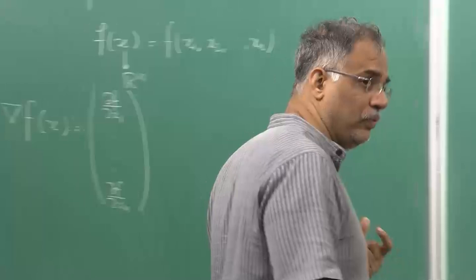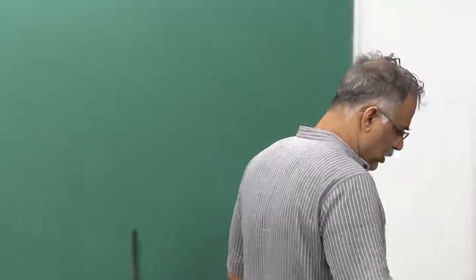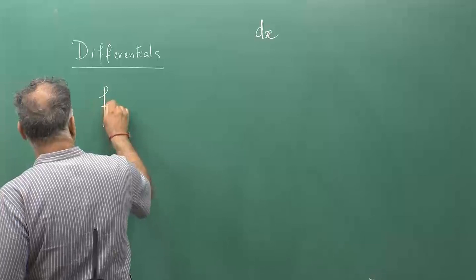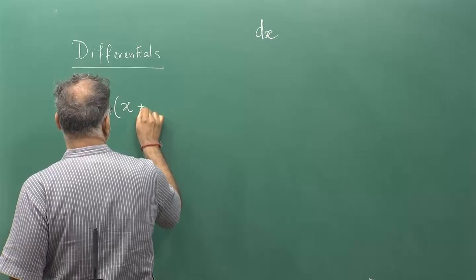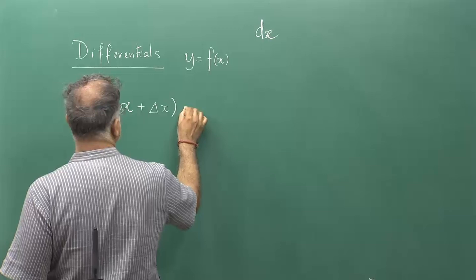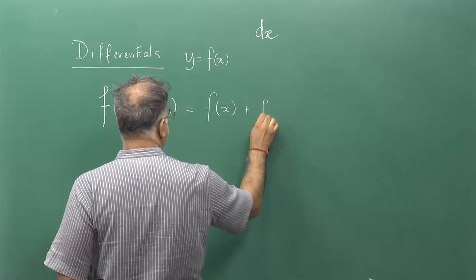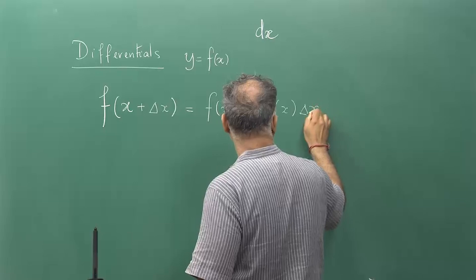Later on, I found in a very beautiful book written by the famous mathematician Richard Courant and Fritz John — a great name in partial differential equations and also in optimization — these two mathematicians wrote a calculus book. Great mathematicians have written books on calculus because certain concepts need very deep clarification. They tried to explain what a differential is. If y is a function of x and I make a Taylor expansion of the first order: f(x + Δx) = f(x) + f'(x)·Δx + o(Δx).